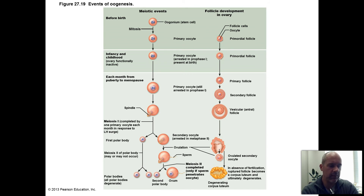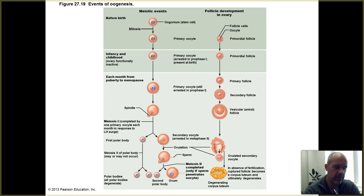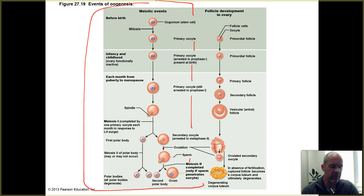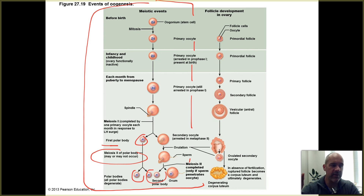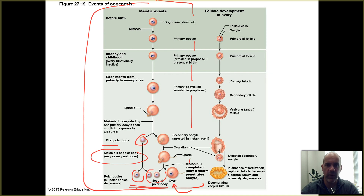Figure 27-19 from the textbook shows the meiotic events just described on the left-hand side, including the polar bodies. The first polar body can itself undergo meiosis 2, just like the secondary oocyte does — this may or may not occur. If it does, you end up with three polar bodies and one fully mature ovum. This contrasts sharply with spermatogenesis, where one primary spermatocyte eventually leads to four functional sperm.